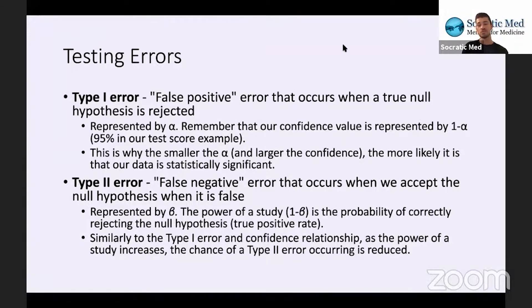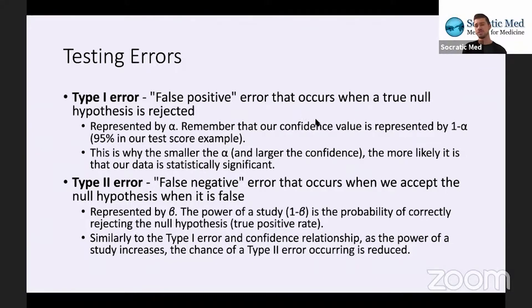The null hypothesis is simply the hypothesis that nothing changed. If we have our two averages of boys and girls performing on a test, the null hypothesis says they performed equally. The alternative hypothesis says one performed better than the other. The null hypothesis is always no statistical significance, no change — because whenever we test something, it's either the expected outcome or it's not.